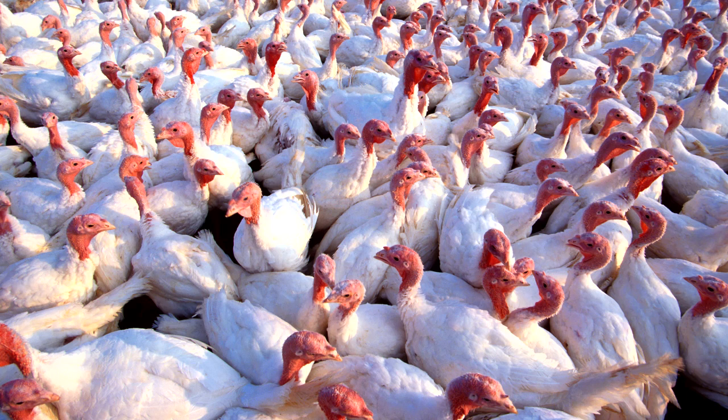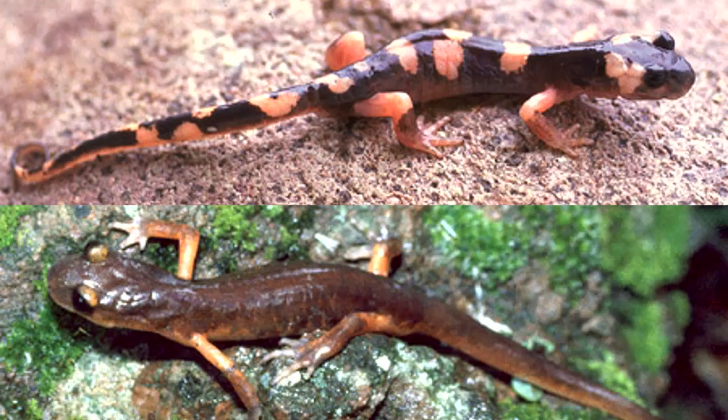Consider Ensatina salamanders, which live in a ring around California's Central Valley. As they migrated, they separated into 19 separate populations, which became more and more distinct. By the time they met at the other end, they had become two separate species.